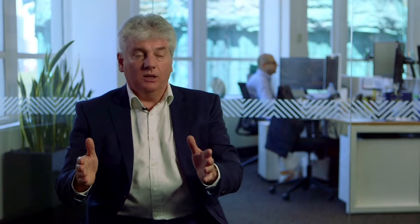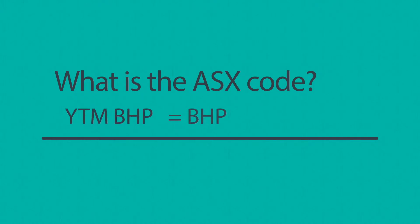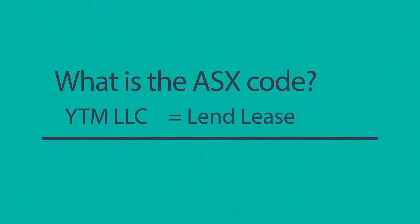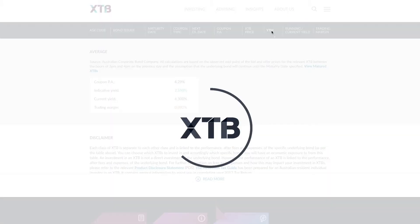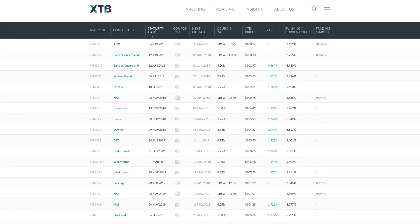The first thing you need to know when you're buying securities is: what is the ASX code? Every XTB starts with the code YTM and then there are another three letters — BHP for BHP, TLS for Telstra, LLC for Lendlease. Go onto our website, pick your three or five XTBs, find the code on the website because we have them all there, write that down on a piece of paper, and then go to your online broker account.